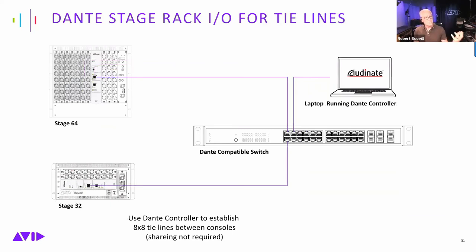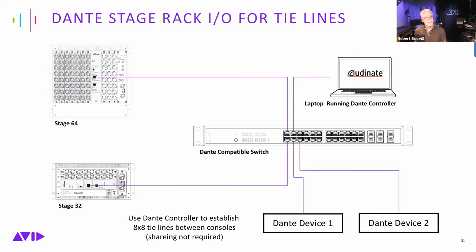The Dante network works in both shared and standalone systems with no clocking issues. With two discrete systems — one using a Stage 64, one using a Stage 32 — connect both Dante cards to the network for 8 sends and returns shared between the systems and any other Dante devices on that network. This operates autonomously from the AVB network and is a much better alternative to MADI tie lines.